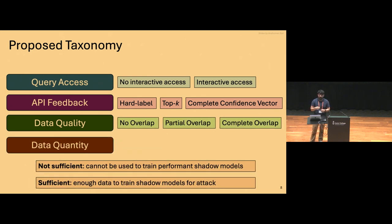And finally, the data quantity. So even if you have this kind of data, how much data do you really have? Is it sufficient to train performant auxiliary models or can you really only compute some statistics with the kind of data you have?